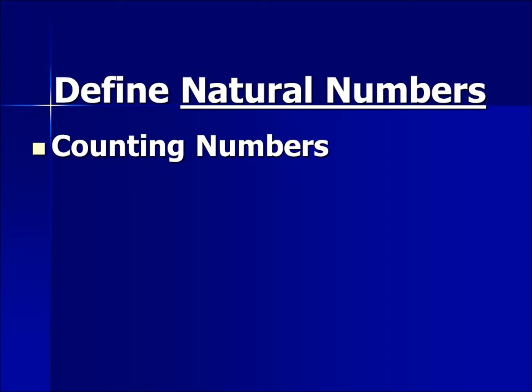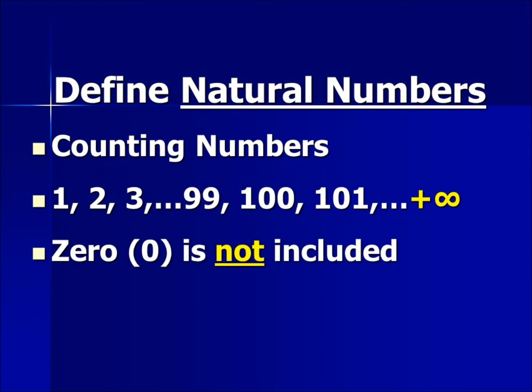Natural numbers begin at the number one and they continue just like you are counting. One, two, three... we skip to ninety-nine, one hundred, one hundred one. Natural numbers continue on to positive infinity, which is represented by the highlighted symbol at the end. Zero is not included in natural numbers.